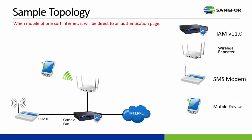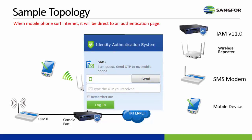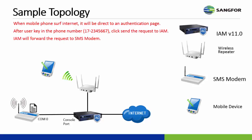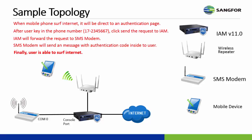When a mobile phone surfs the internet, it will be redirected to an authentication page. You can see you can key in the phone number and click Send. After the user keys in the phone number and clicks Send, the request is sent to the IM. The IM forwards the request to the SMS modem, and the SMS modem will send a message with the authentication code to the user. Finally, the user is able to surf the internet.